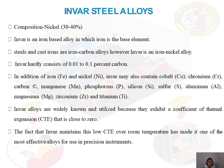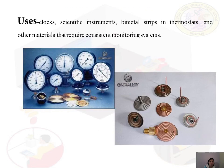Invar steel alloy is an iron-based alloy with 30 to 40 percent nickel. It contains 0.01 to 0.1 percent carbon and exhibits a coefficient of thermal expansion close to zero. It is used in clocks, scientific instruments, thermostats, and other materials that require consistent dimensional monitoring systems.